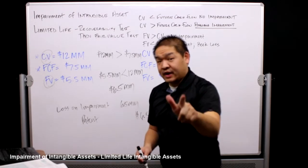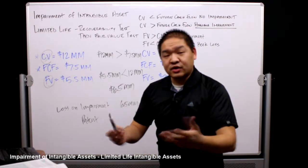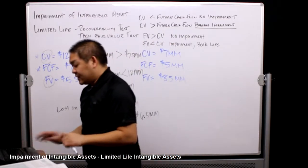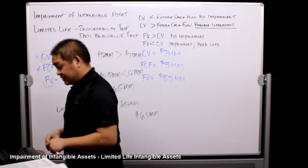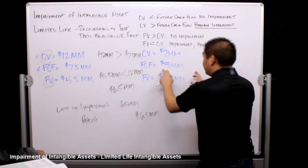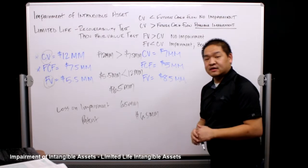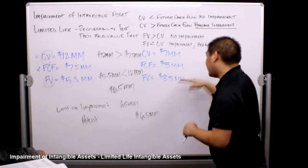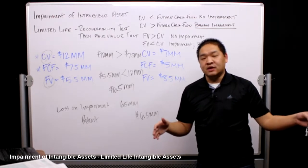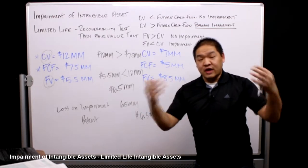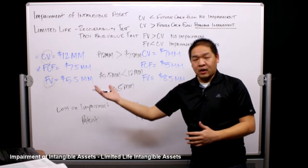Now we're going to use the same problem but change the numbers. In this case, the carrying value of the patent is seven million dollars, the expected future cash flows are five million dollars, and the fair value is eight point five million. So we have a carrying value of seven million, future cash flows of five million, and a fair value of eight point five million.